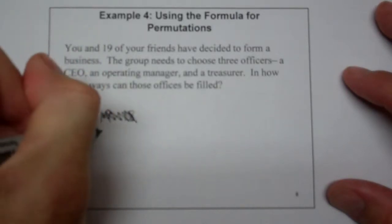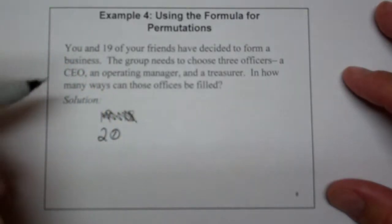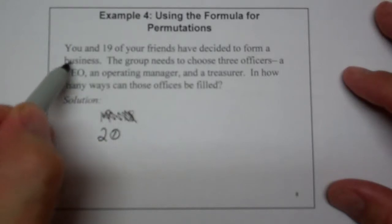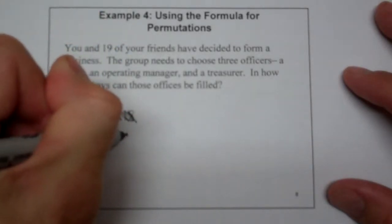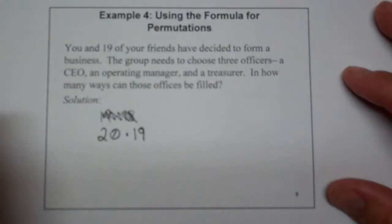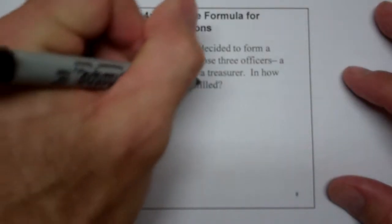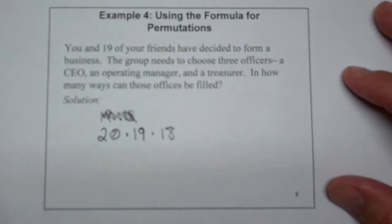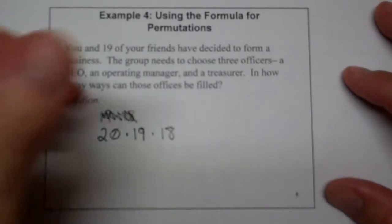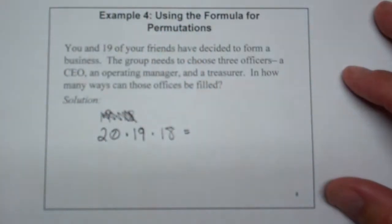You're going to have 20 people that you're going to pick from for the CEO. Once you pick the CEO, you're going to have 19 people that you're going to pick from for the operating manager. Once you pick the operating manager, you're going to have 18 people to pick for the treasurer. So that's a lot of people.